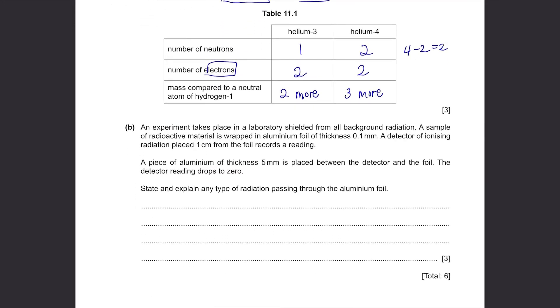Part B. An experiment takes place in a laboratory shielded from all background radiation. A sample of radioactive material is wrapped in aluminum foil of thickness 0.1 mm. A detector placed 1 cm from the foil records a reading. A piece of aluminum of thickness 5 mm is placed between the detector and the foil. The detector reading drops to 0. State and explain any type of radiation passing through the aluminum foil. We have learnt 3 types of radioactive material: alpha, beta, and gamma. Alpha particles will be stopped by the aluminum foil of thickness 0.1 mm. Then beta rays can pass through this, but will be stopped by the aluminum of thickness 5 mm. Lastly, for gamma rays, it will not be stopped by 0.1 mm and 5 mm. It can pass through all the aluminum foil.